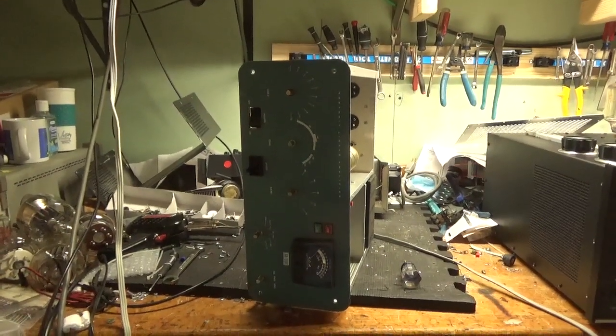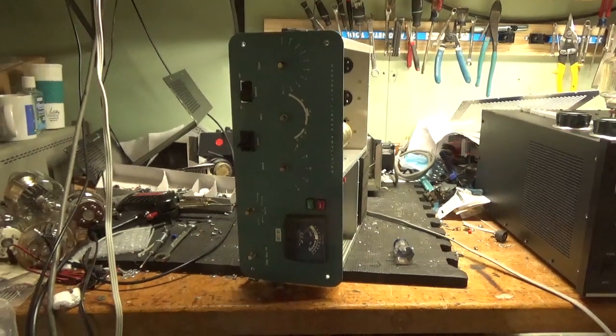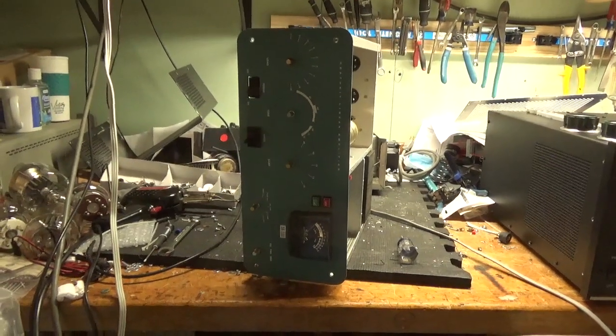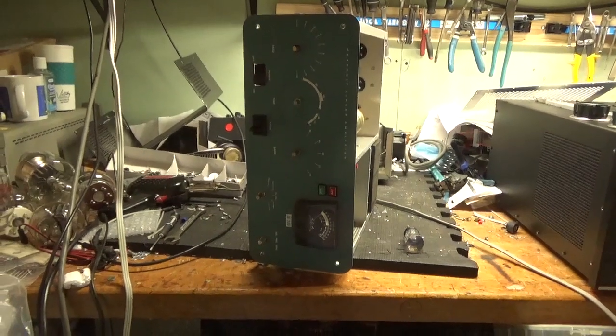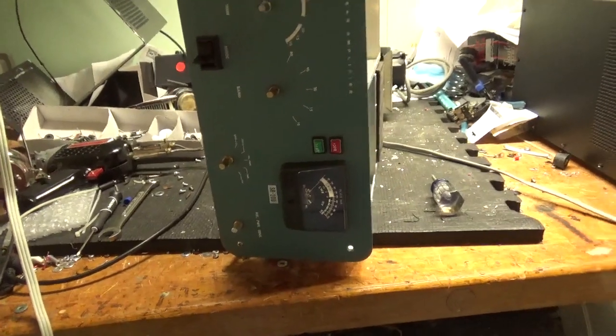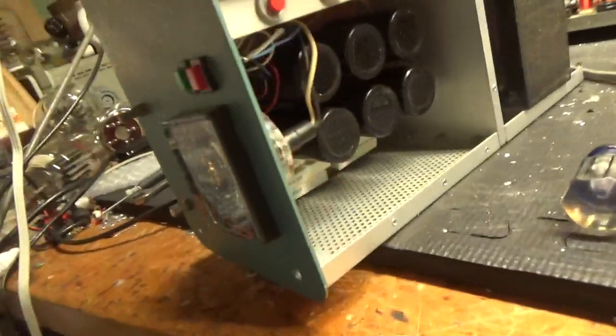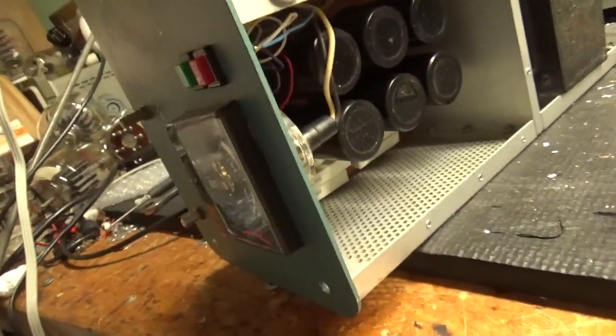Here we have a Heathkit SB200, I already started taking it apart. Looks like someone added an operate lamp, standby lamp, and an operate standby switch. So he wants me to put the Harbach filter cap board in and do all the other stuff I normally do.